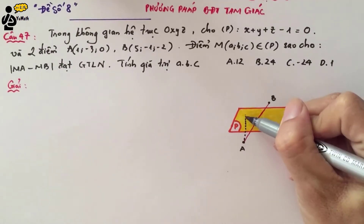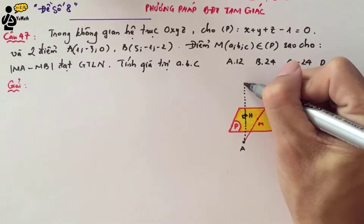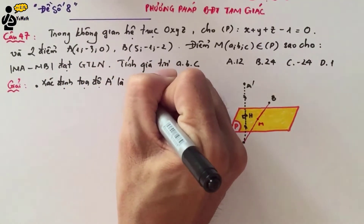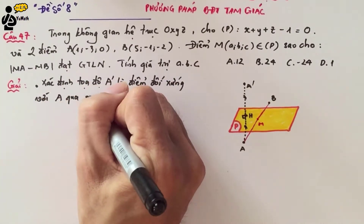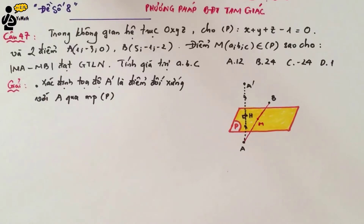Since points A and B are on opposite sides of plane P, we need one more step: find point A', the reflection of point A across plane P, and determine its coordinates. To find A', first find point H, the foot of the perpendicular from A to plane P. This method has been covered in previous videos. Write the equation of line AH, then find its intersection with plane P.